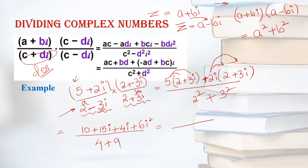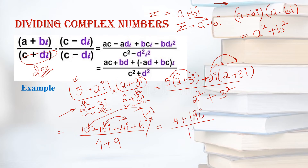Now solve the numerator. We have 10, and 6i² where i² means negative 1. Add the real numbers: 10 plus 6 times negative 1 gives negative 6, and 10 minus 6 gives 4. Then add the imaginary numbers: 15i plus 4i gives 19i. And in the denominator, 4 plus 9 gives 13.